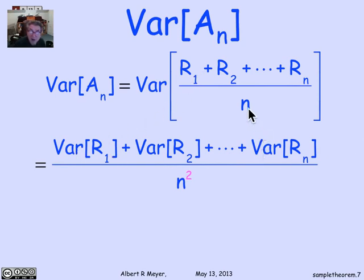Now if we factor out 1 over n, and now this is a factor of 1 over n times this sum. When we factor a constant out of the variance, it squares. So the denominator here becomes n squared, and that's critical.